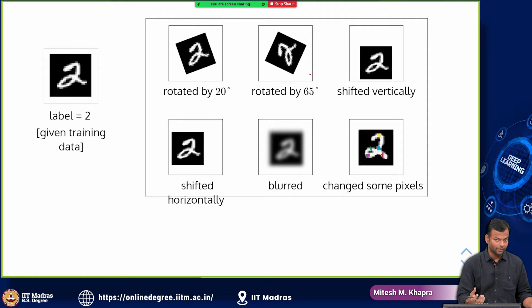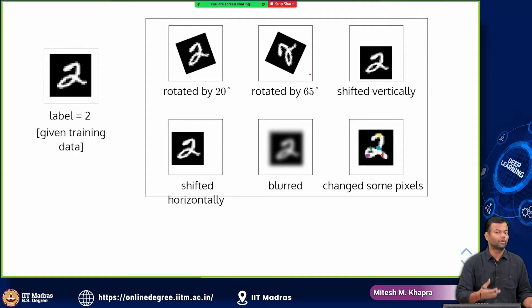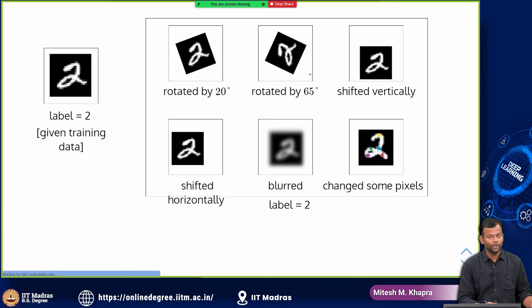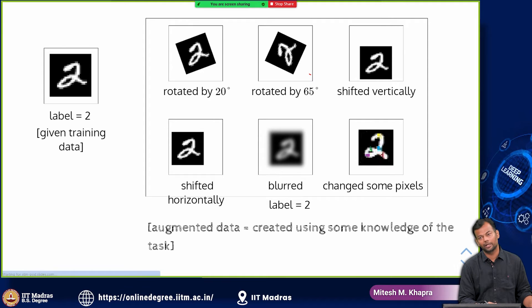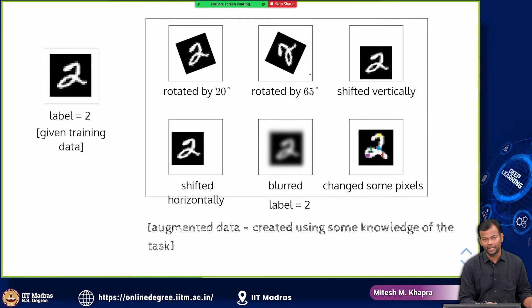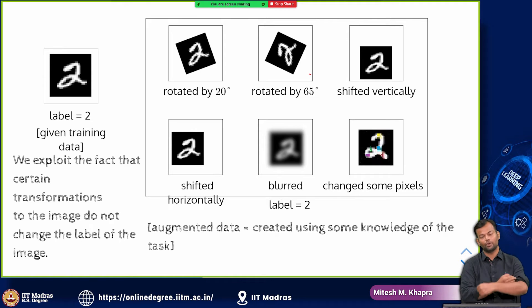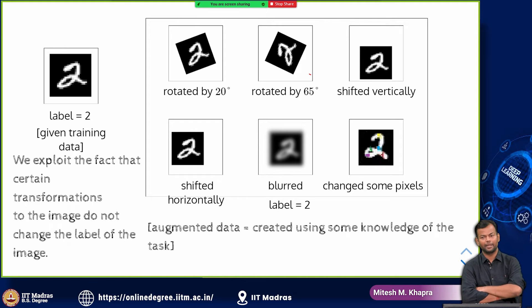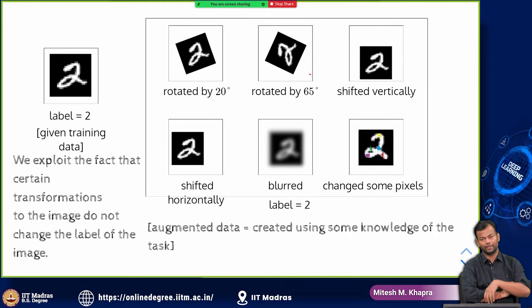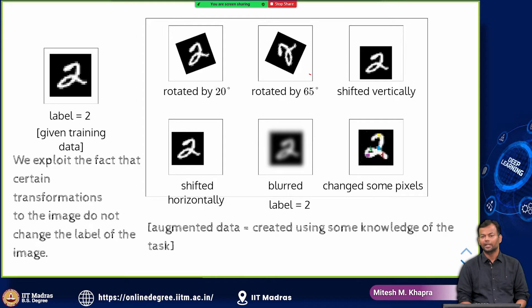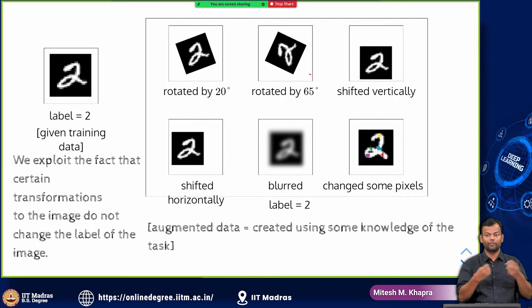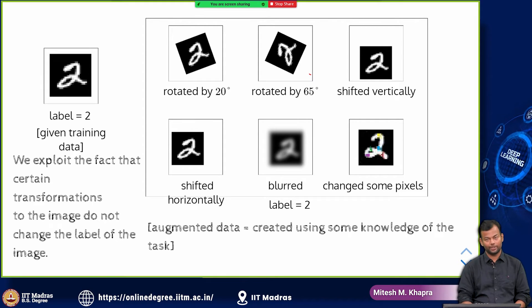And by doing all of this, you have just created more training data and what you are doing here is actually you are exploiting the knowledge of the task. You know that if you rotate the image, if you do any of these augmentations that you have seen and there are many such more augmentations possible in case of image classification, the label does not change. So I can create a lot of data for free from the data that was given.